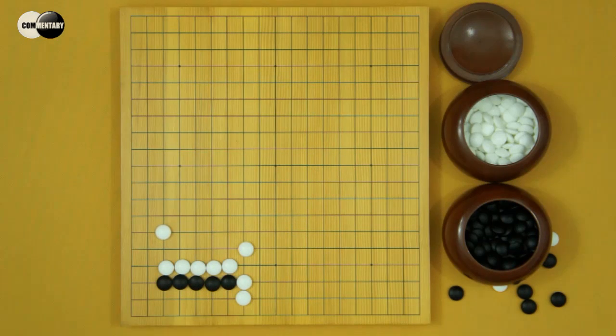This is today's problem. A life and death problem. This shape is frequently seen. White can kill Black. How should White play? I will give the answer in the next episode.